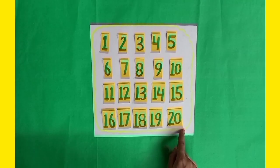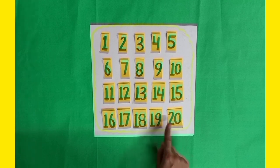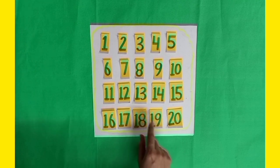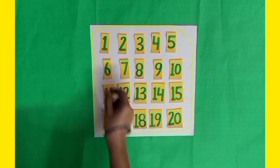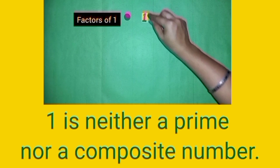Dear students, first of all, we will separate prime and composite numbers between 1 to 20. First of all, we will take away 1 out of this because 1 has only 1 factor. So, 1 is neither a prime nor a composite number.